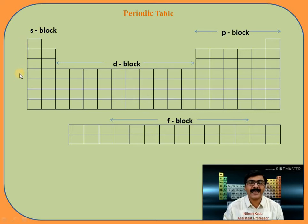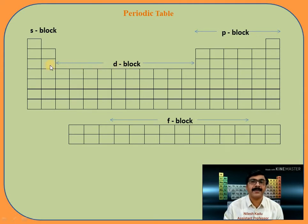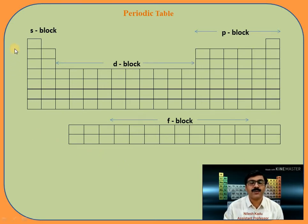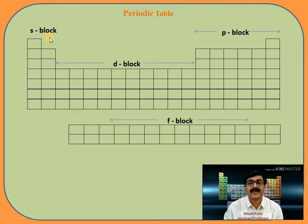S block is present at the extreme left of the periodic table. P block is present at the extreme right. D block is situated in between S and P block. And F block is present at the bottom of the periodic table. Now, what is called S block, P block, D block, and F block?